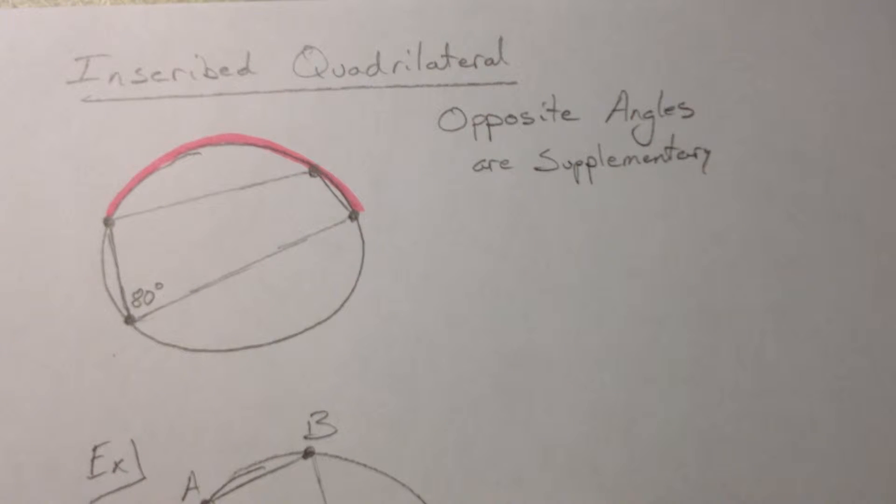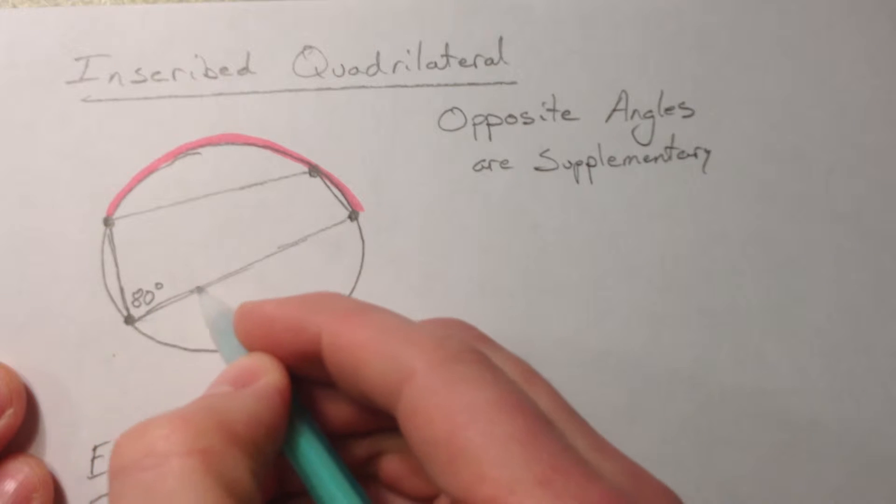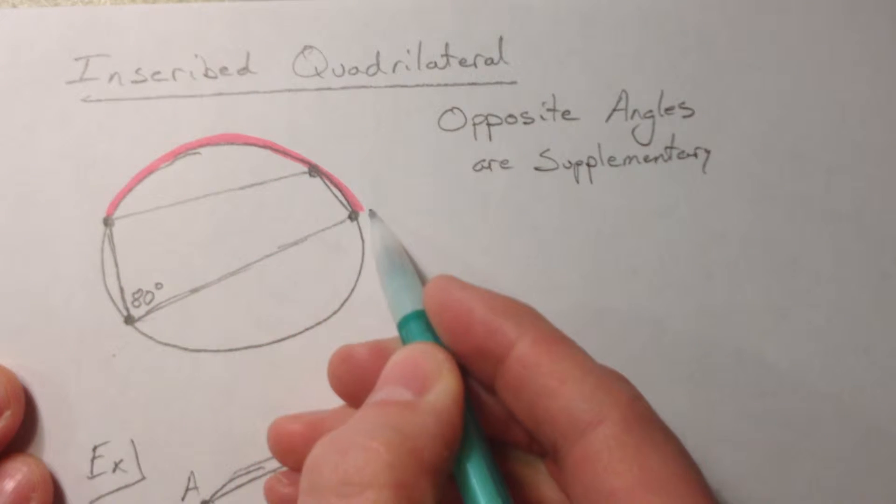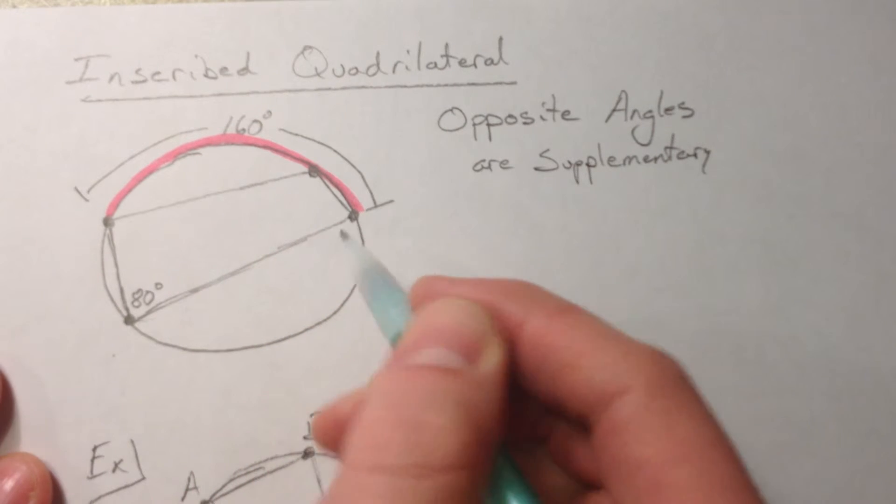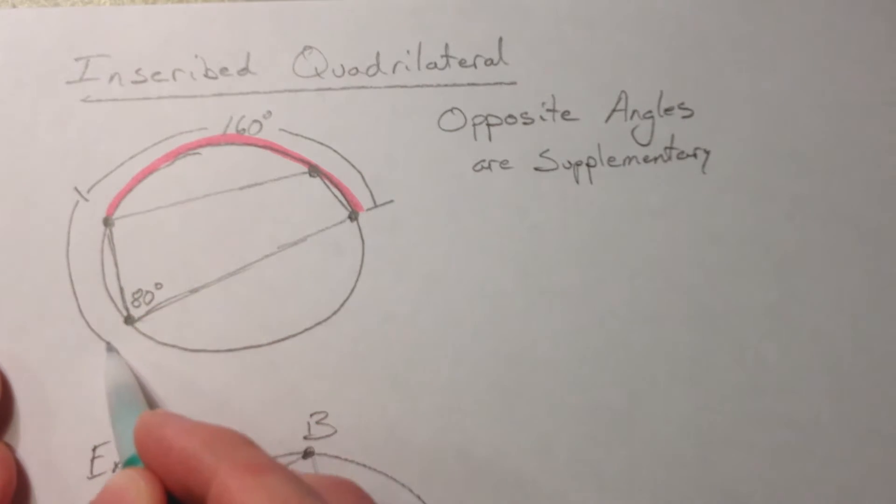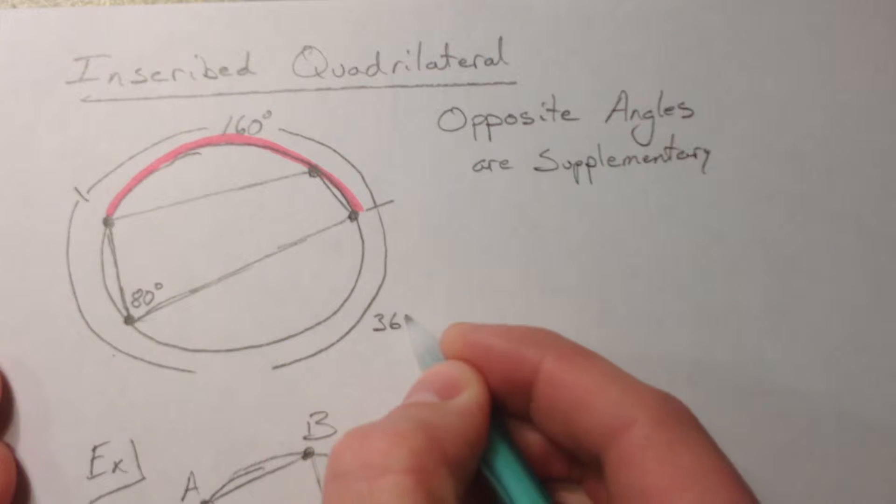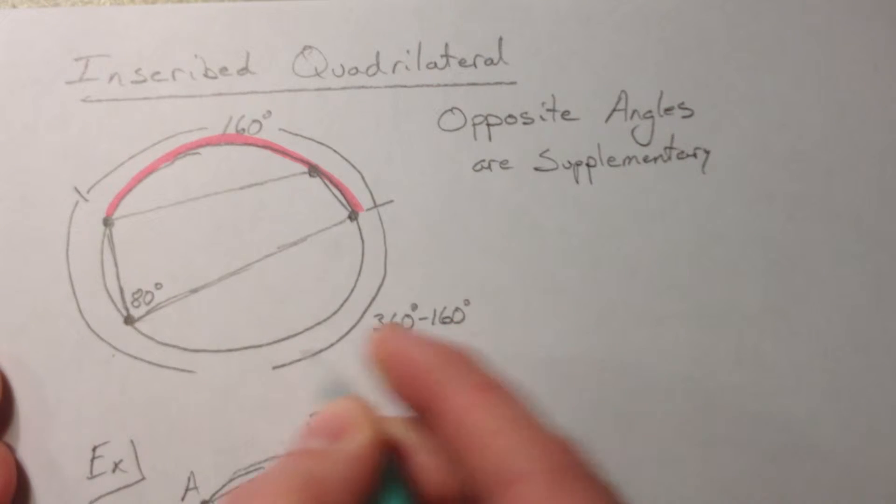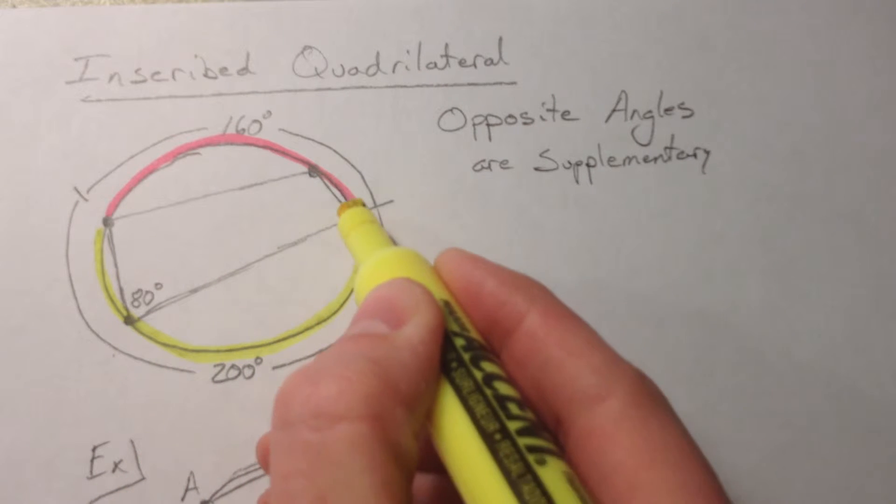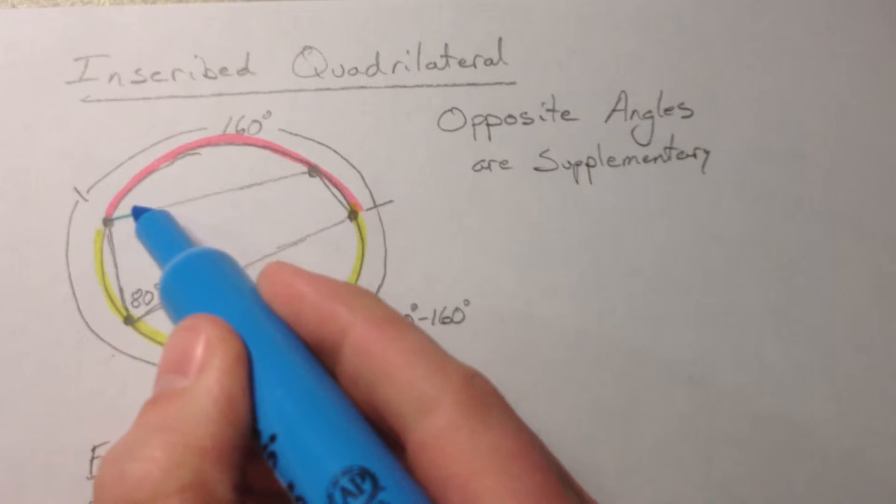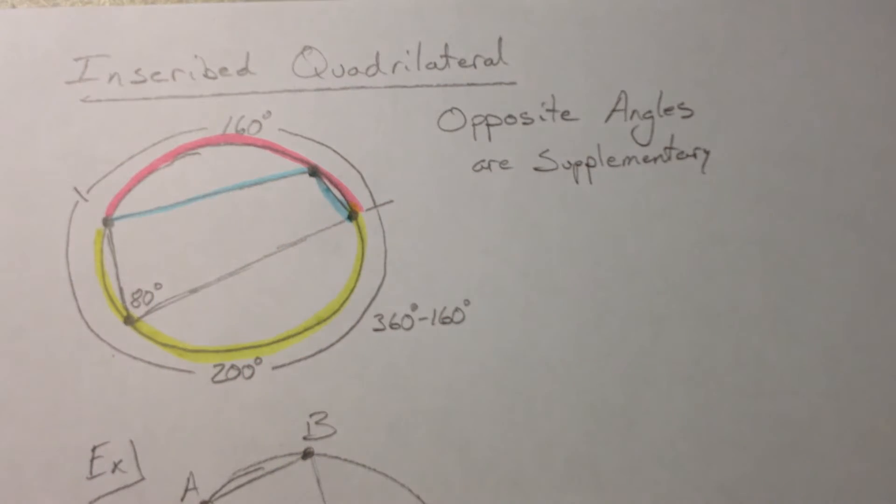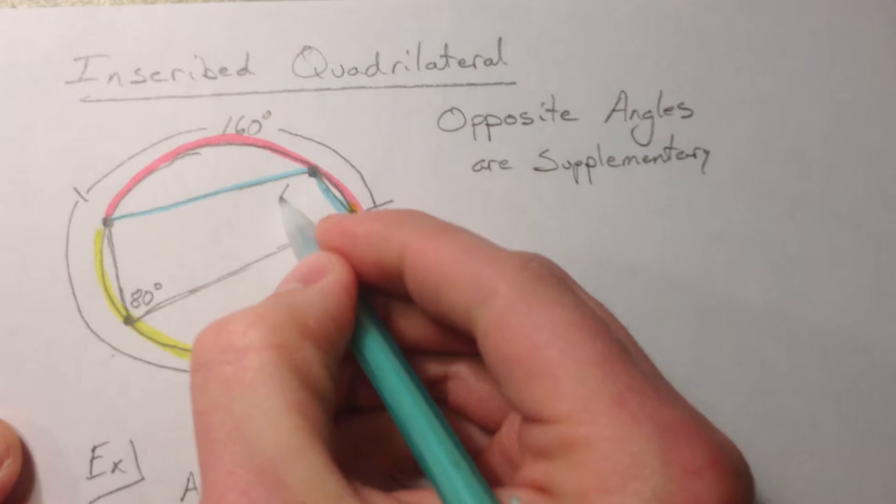Now another special thing to look at is if you have an inscribed quadrilateral. So let's say we have an angle here that is 80 degrees. That means this intercepted arc here, the whole thing, is 160 degrees. And if the whole thing is 160, that's the minor arc. If I go the other way around it'll be 360 minus 160, and so this will be 200 degrees, and that's the yellow one here, 200 degrees goes all the way around here. So if that is 200 then this inscribed angle right here is